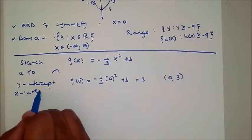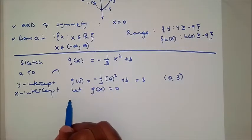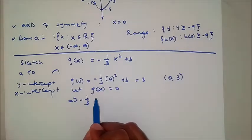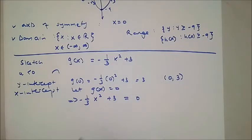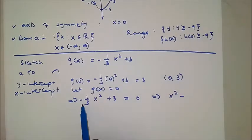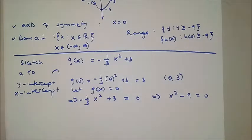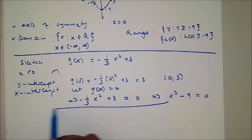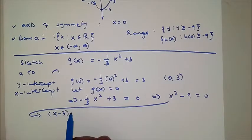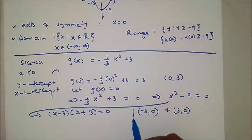For the x-intercept, we let g of x equal to 0. So 0 equals negative 1 over 3 x squared plus 3. We multiply by negative 3 everywhere to get x squared minus 9 equals 0. This is the difference of two squares: (x minus 3)(x plus 3) equals 0. The x-intercepts are (-3, 0) and (3, 0).